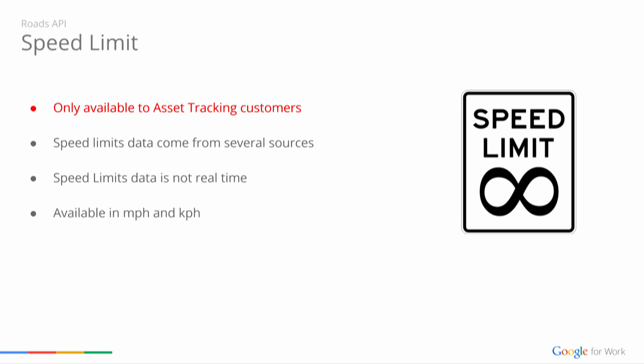Let's shift focus to speed limits. Currently, speed limits is only available to our asset tracking customers. We get our speed limits data from a variety of sources, including our very own Street View imagery, and the data is extracted from captured speed limit signs. Quality is high in street-smart countries. However, where data is not available through Street View or third-party sources, we return defaults based on region and road type. The speed limit data is not real time, but we're constantly updating our data to provide users with the latest and greatest.